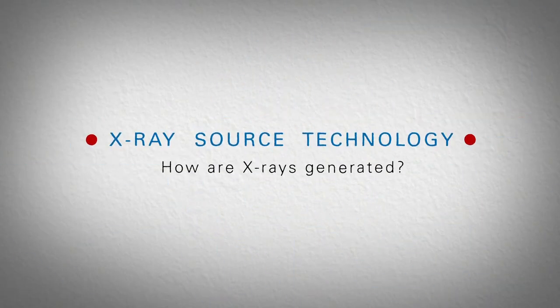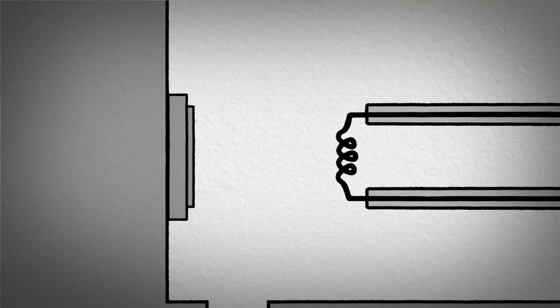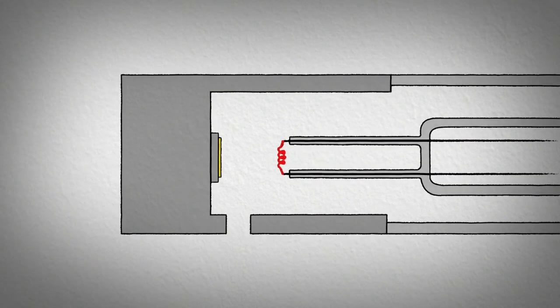How are X-rays generated? Classic X-ray sources consist of a tungsten filament and a metallic anode suspended in a vacuum tube.